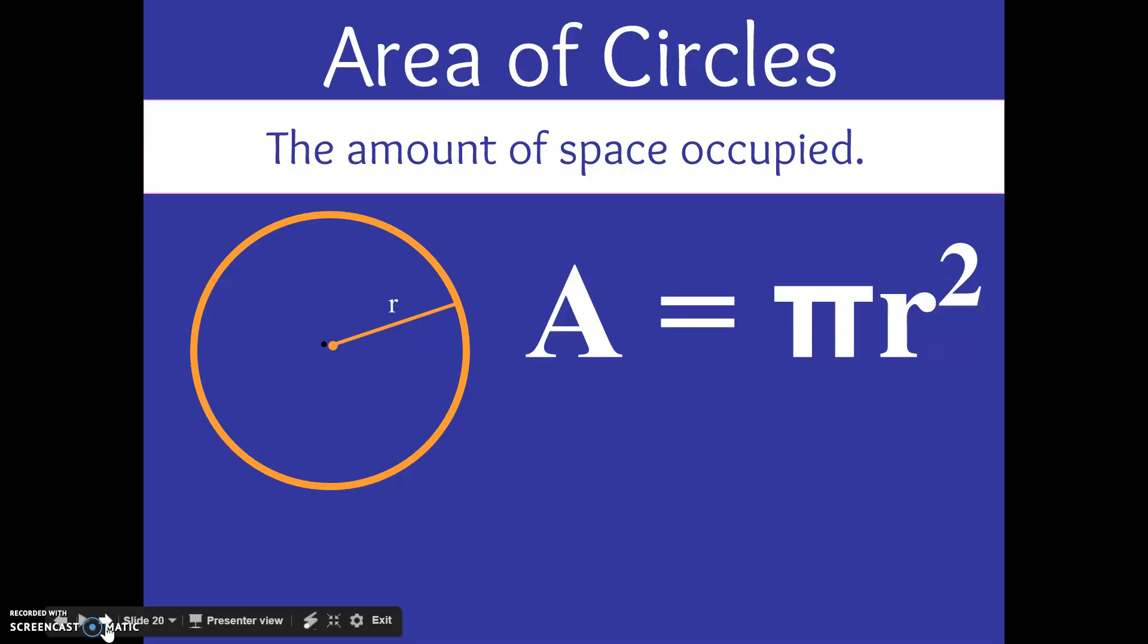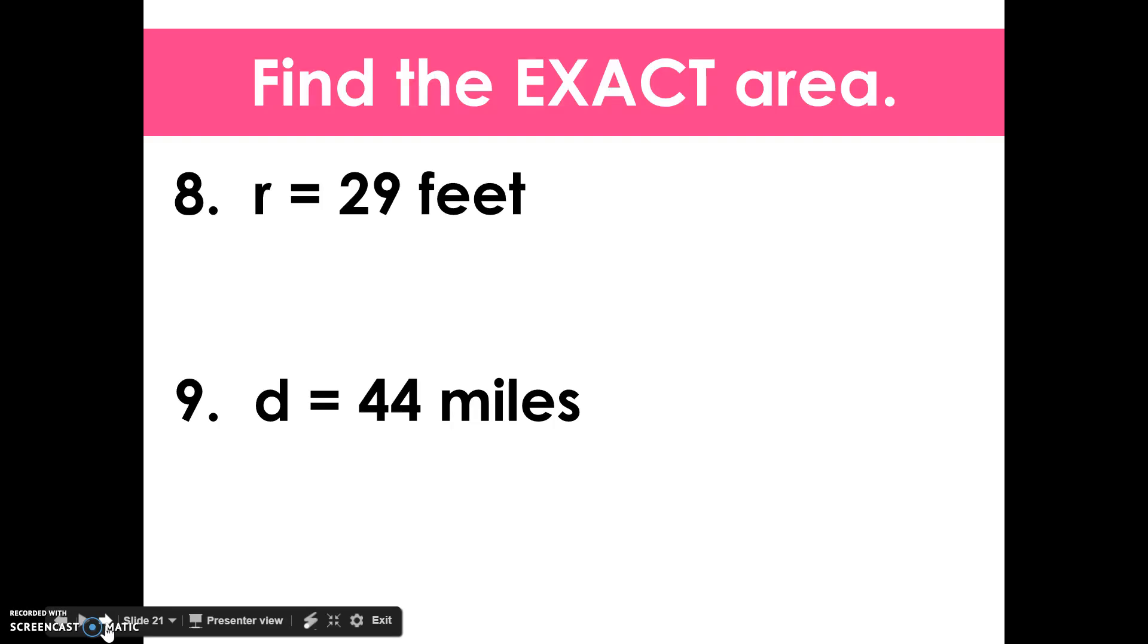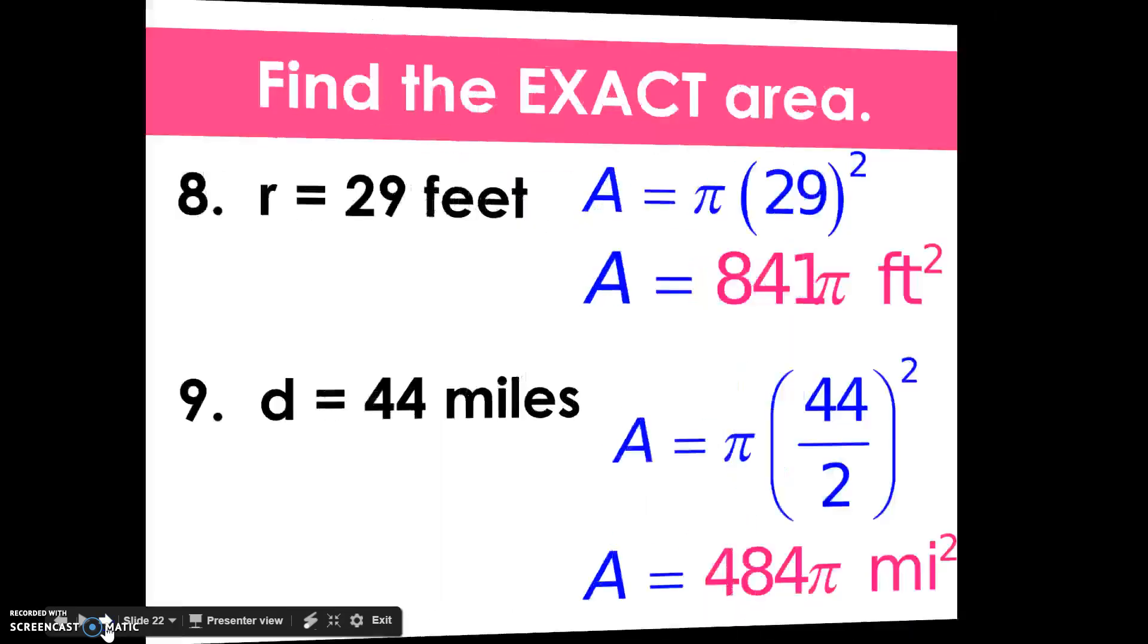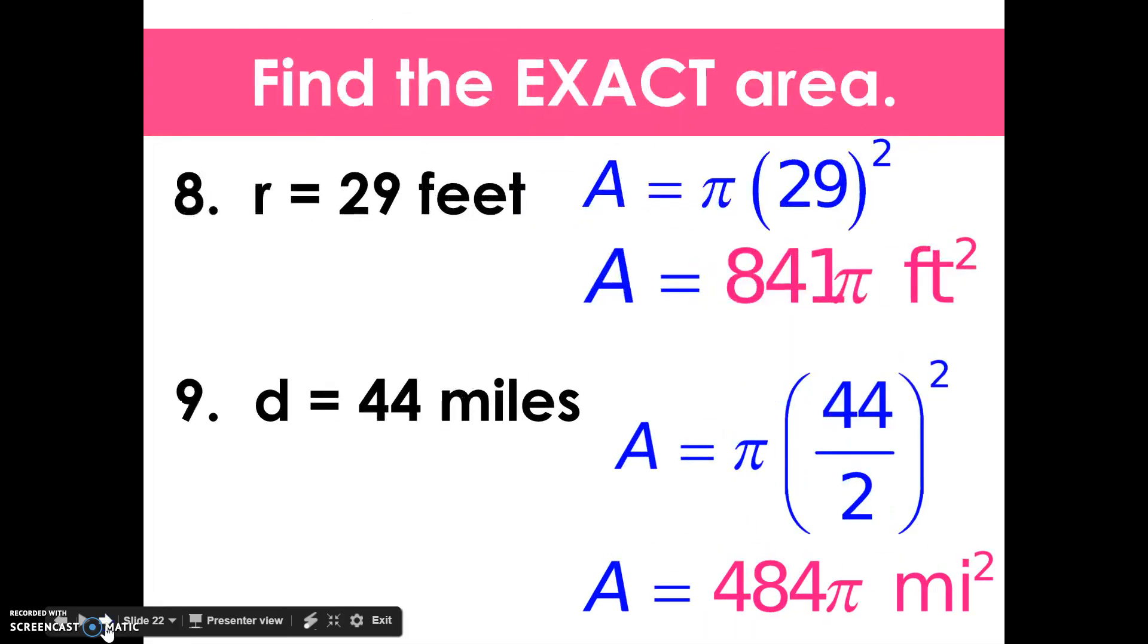Alright, so area of circles. Again, another equation that you are familiar with. Area equals pi times r squared. It's the amount of space on the inside. So go ahead and find the exact area. Again, exact, keeping pi in your answer. Alright, you've had a chance to do that. Let's find the answers. There you go. There are the answers.